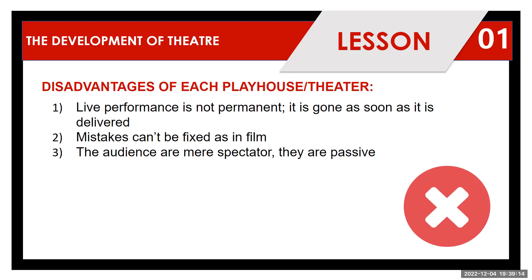Mistakes cannot be fixed as they can in film. In film, the performance is recorded and can be edited using modern technology — CGI, holographics, and so on. Compared to a live performance, mistakes in a recorded film can be minimized significantly.